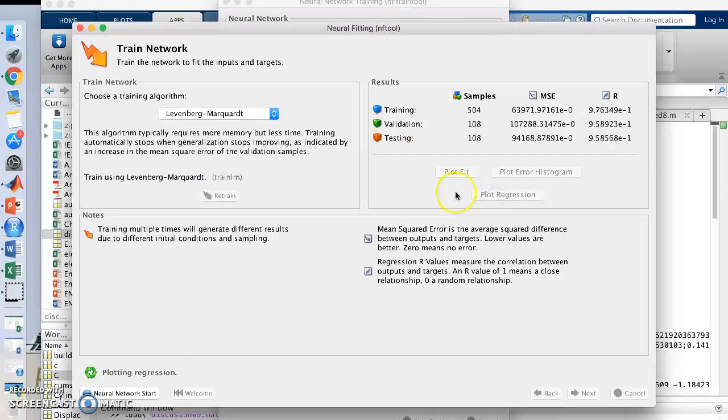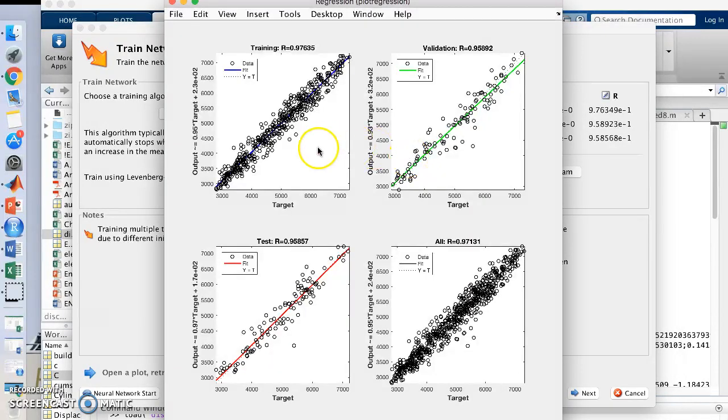Then we plot the regression. This is how far off the data points are in our test set. Of course, the training set will be pretty close. This is the best fitting line.